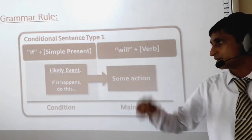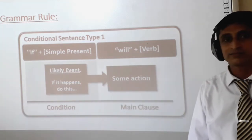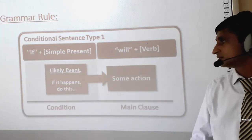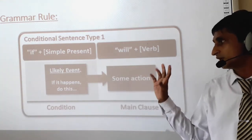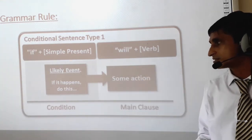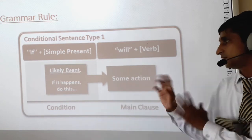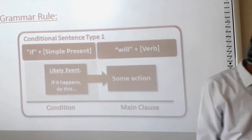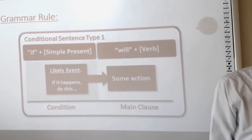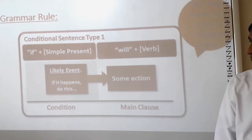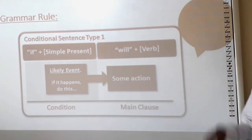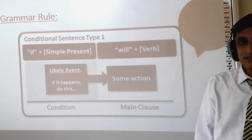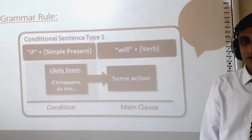If comes with simple present tense, and the result clause — the main clause — goes with will. For example: if something happens, the result will be like this. If you are confused, let's see an example. First of all, you have to write this in your writing book.